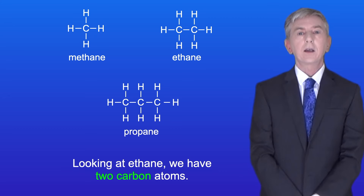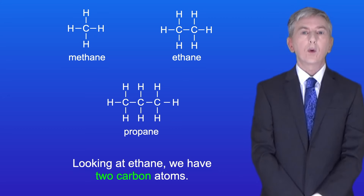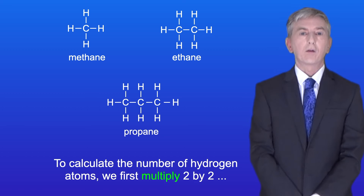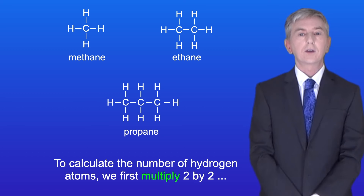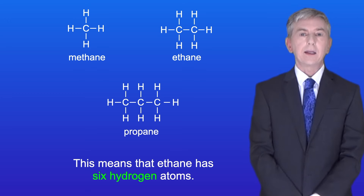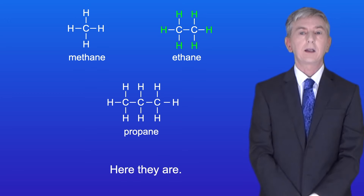Looking at ethane we have two carbon atoms. To calculate the number of hydrogen atoms we first multiply two by two and then we add two. This means that ethane has six hydrogen atoms and here they are.